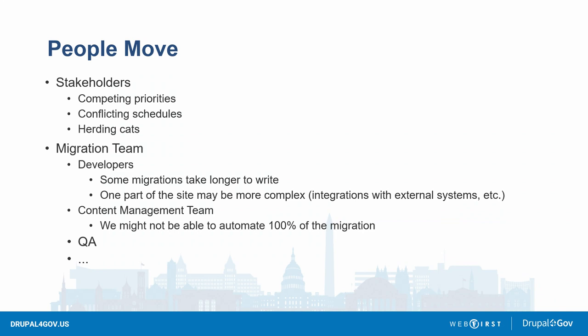People move too. Stakeholders have conflicting priorities and different schedules, and if you have enough of them it might feel like herding cats. Your migration team also has people on it — we're all humans and we do our best to estimate ahead of time, but there's a chance we'll have to adapt and change our approach. This works well with an agile workflow.